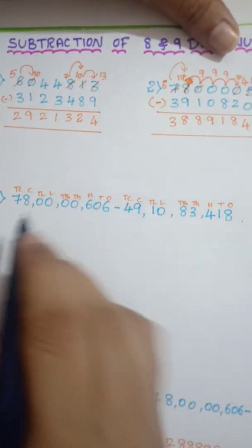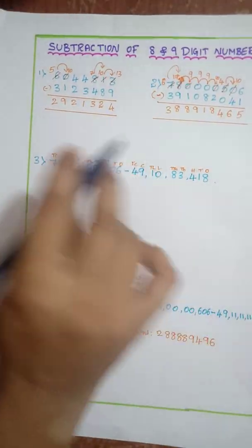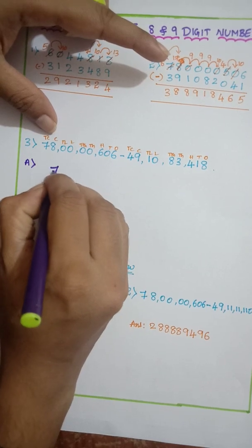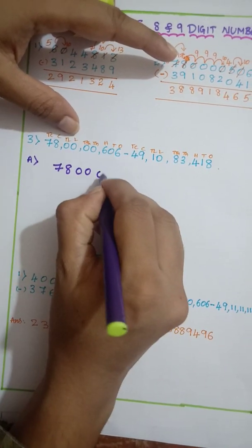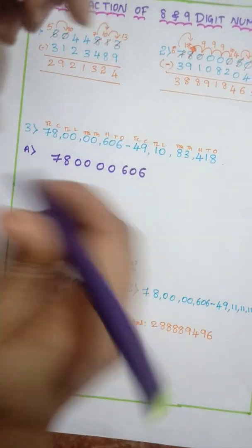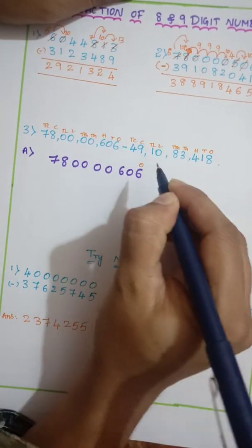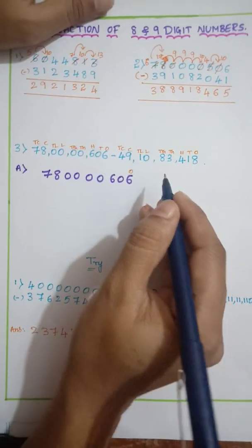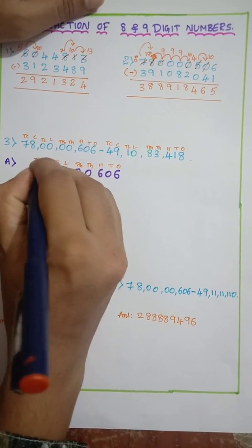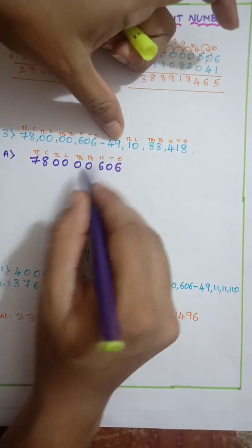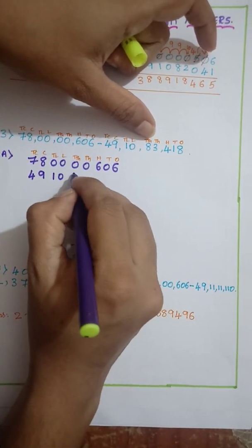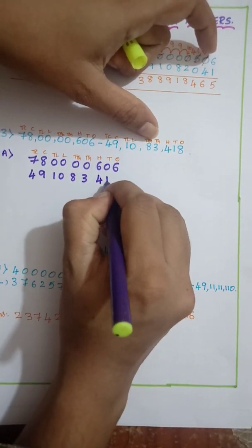Since the place values are the same so we don't need to worry directly also you can write without writing the place values now. So let me write the numbers. Seventy-eight crore, six hundred and six. And here while writing the number in respective place you have to write. So it will be good if we write the place value so that we can arrange in respective place without any confusion. Once, tens, hundreds, thousand, ten thousand, lakh, ten lakh, crore, ten crore. So now let me write down the number that is 49 crore, ten lakh, eighty-three thousand, four hundred and eighteen.